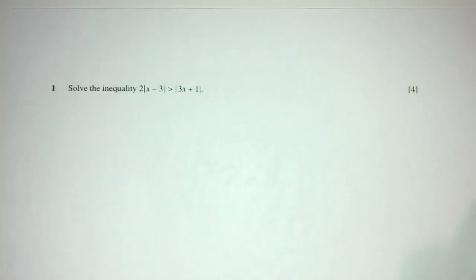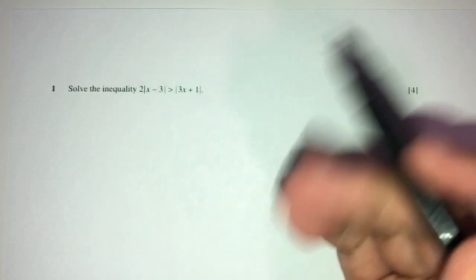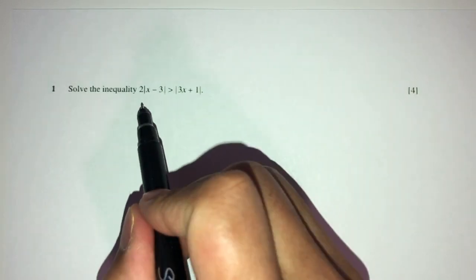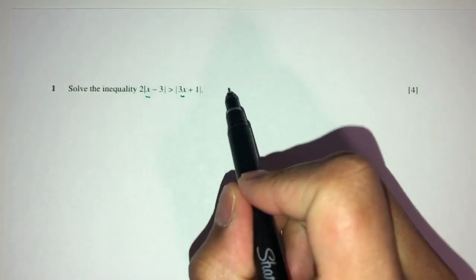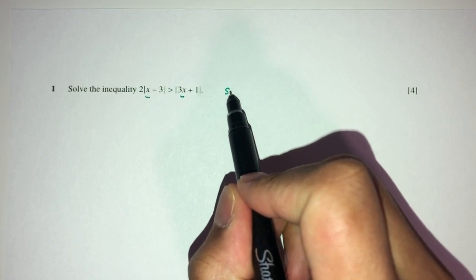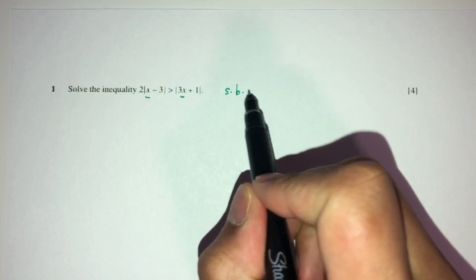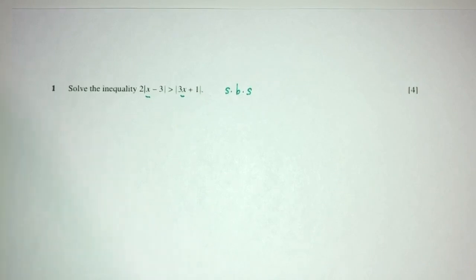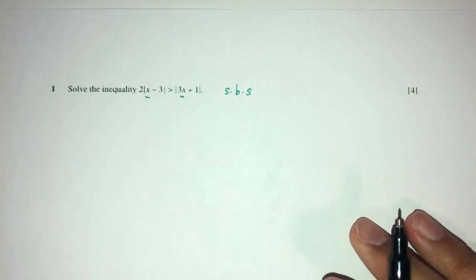Question number one: we have to solve the inequality. As you can see, we have modulus on both sides and x on both sides. When this happens, we can just square both sides, or if you want, you can always draw graphs and find those values accordingly.